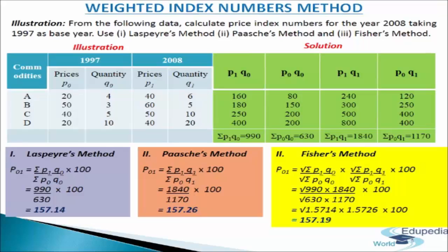Finally, applying Fisher's method: P01 = √[(ΣP1Q0/ΣP0Q0) × (ΣP1Q1/ΣP0Q1)] × 100, substituting the values, we get 157.19. You can see that in every method the answer comes to approximately 157, with only slight differences. This is how we calculate the price index numbers using Laspeyres', Paasche's, and Fisher's methods.